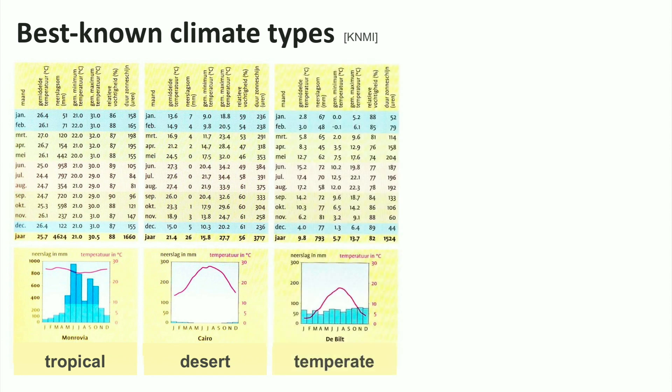Here we see the temperate climate, such as in the Netherlands. Relatively cool temperatures, not too much difference between summer and winter, and precipitation all year round, but not as much as in a tropical climate.